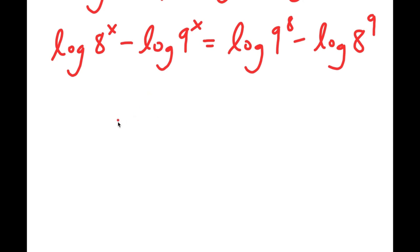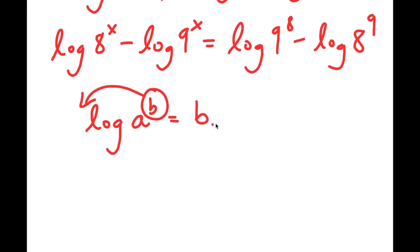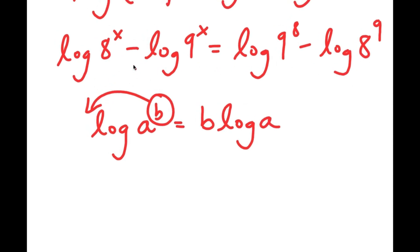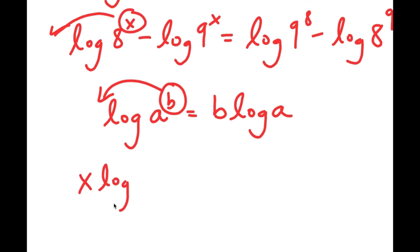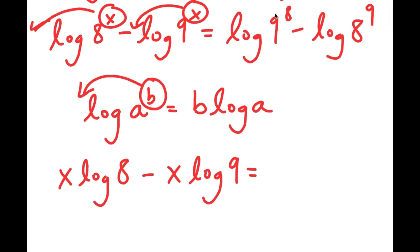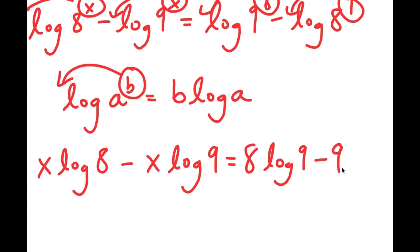Another property of logarithms is that if I have something in the form log a to the power of b, I can move this exponent b to the front — this is the same thing as b times log a. I can use this property for all my terms. So log 8 to the power of x becomes x times log 8, minus log 9 to the power of x becomes x times log 9. And this is equal to log 9 to the power of 8, which becomes 8 times log 9, minus log 8 to the power of 9, which becomes 9 times log 8.